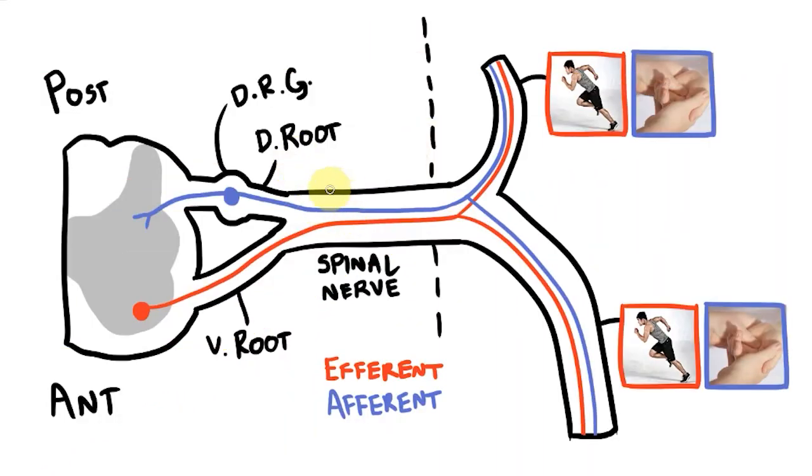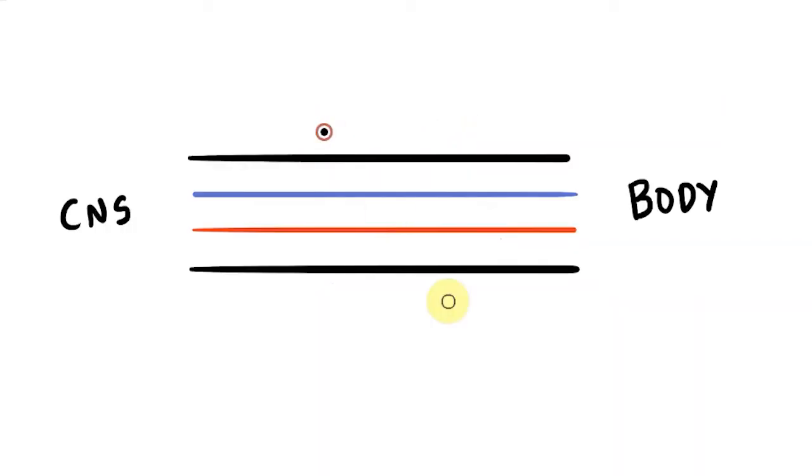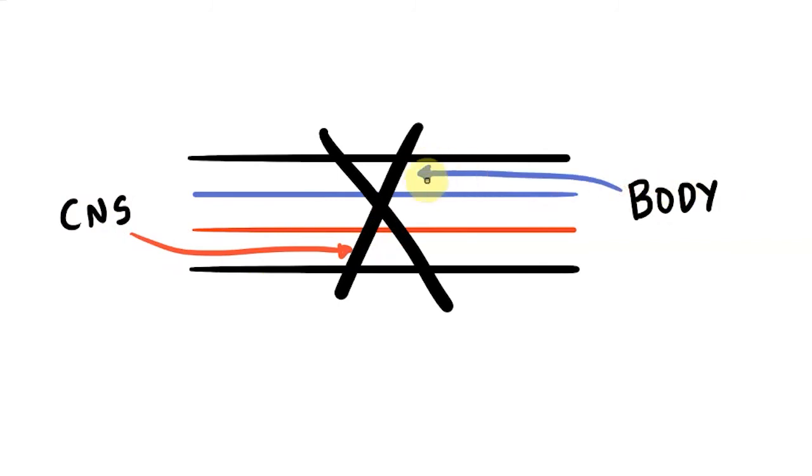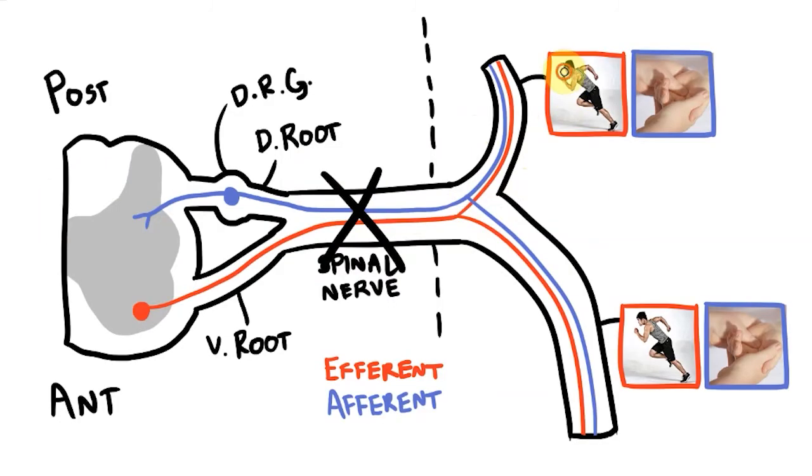So if you're happy with that let's look at how damage to these structures could present clinically. If we damage a spinal nerve what symptoms will we see? Well the symptoms of nerve damage will always be distal to the site of the damage. Efferent impulses can't get out past the injury and afferent impulses are unable to return. In this case it means we'll lose all of the motor and sensory innervation in both rami.